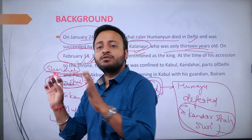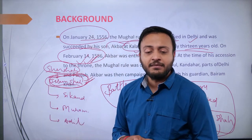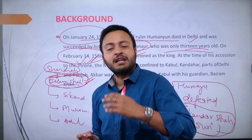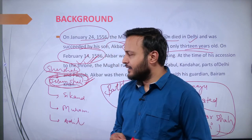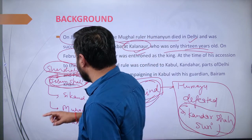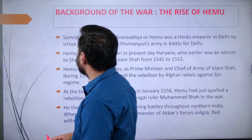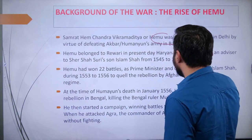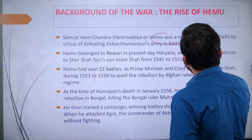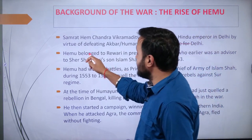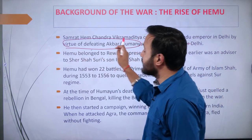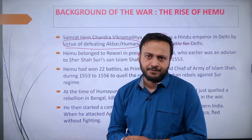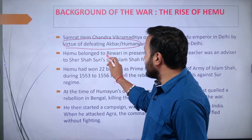After that, Hemu started to dream of establishing his own empire at Delhi. Samrat Hemachandra Vikramaditya, who was actually the Hindu ruler of Delhi, saw the dream of establishing his own kingdom there.